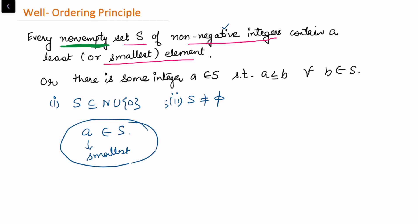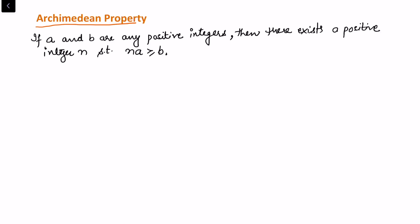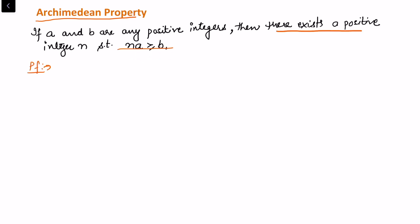Based on that, we can prove the result or application that we intend to prove. As an application of the Well-Ordering Principle, let us first prove the Archimedean Property. The statement of the Archimedean Property says: if a and b are any positive integers, then there exists a positive integer n such that na is greater than or equal to b.